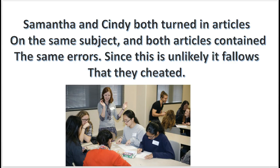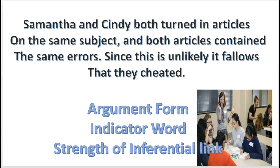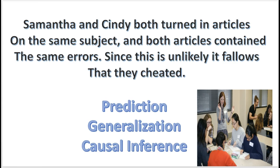Here is a final practice problem. Listen to this argument: Samantha and Cindy both turned in articles on the same subject, and both articles contained the same errors. And since this is unlikely, it follows that they cheated. That's right, it's inductive. The word 'unlikely' indicates probabilistic reasoning, the conclusion does follow probably from the premise, and the argument has an inductive form — a causal inference. The argument proceeds from an effect to a cause: the effect is the same wrong answers in both articles, alleged to be caused by cheating.